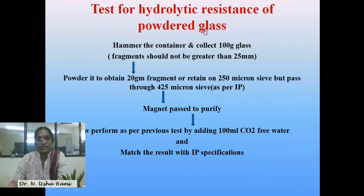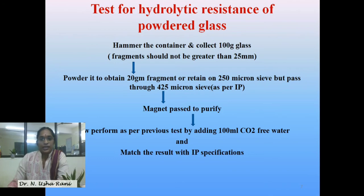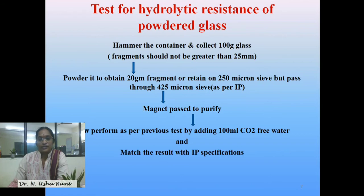The hydrolytic resistance test for powdered glass is almost the same as the previous one. The only difference is that you hammer the container and make it into fragments. Take 20 grams of fragments with a size that retains on a 250-micron sieve but passes through a 425-micron sieve. Pass the fragments through a magnet to remove any metal impurities, especially iron. Then add carbon dioxide-free water to the fragments, autoclave, remove the sample, titrate with the standard acid, and compare the titular value with IP specifications.